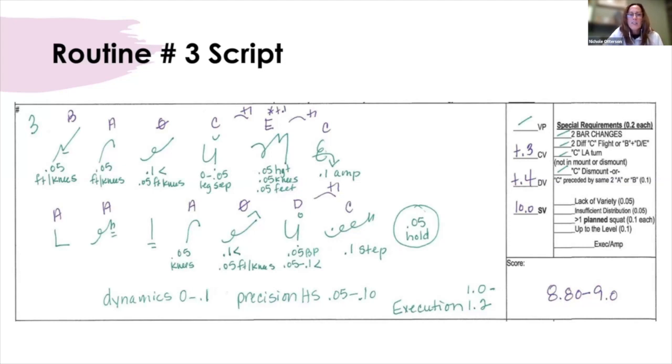And on the double back dismount 0.1 on the step. Watching it there's probably should have been 05 on the feet because they're pretty flexed but definitely one on the step and then 0.05 for not holding. There was 0 to 0.1 in dynamics also, precision of the handstands 0.05 to 0.1. And execution wise it's 1 to 1.2 in execution and the score range on that one is 8.8 to 9.0 with an 8.9 average on that one.